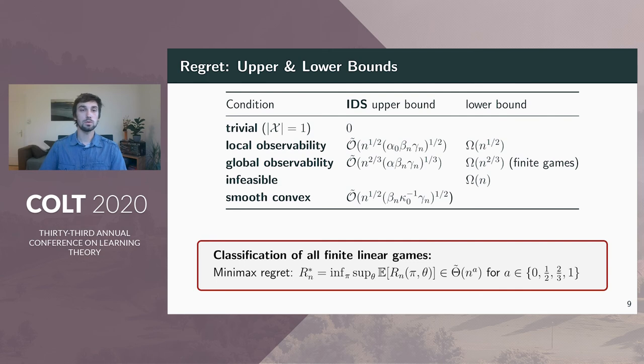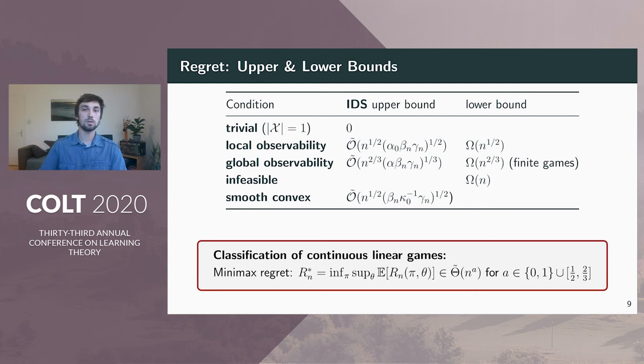All bounds hold for continuous action sets. Only the lower bound for globally observable games explicitly uses that the action set is finite. We also showed that this is not an artifact of the analysis. In continuous games, where the action set is sufficiently curved, the regret of IDS can be as small as square root n without the local observability assumption. For continuous games, this means that the regret rate can be anywhere between one-half and two-thirds, and the exact characterization of the achievable regret rate is still an open problem.